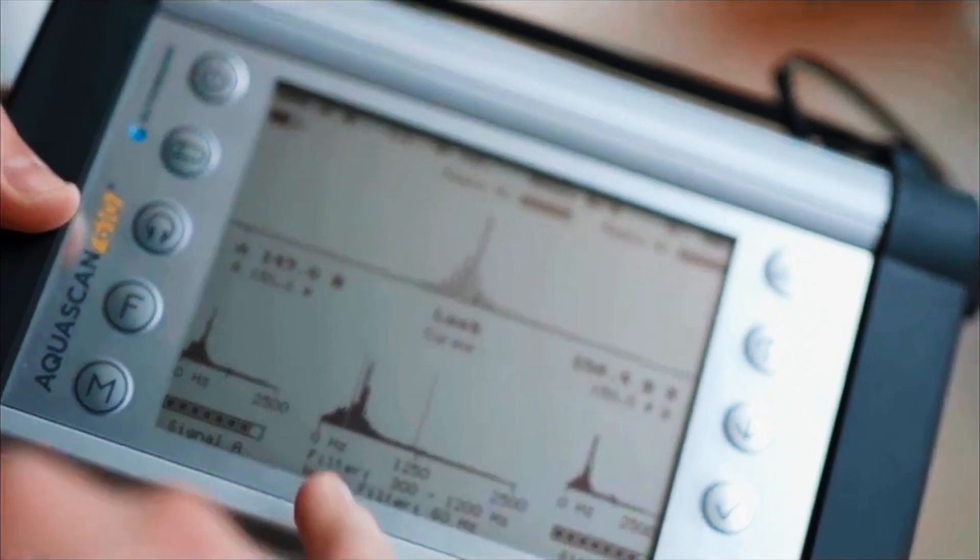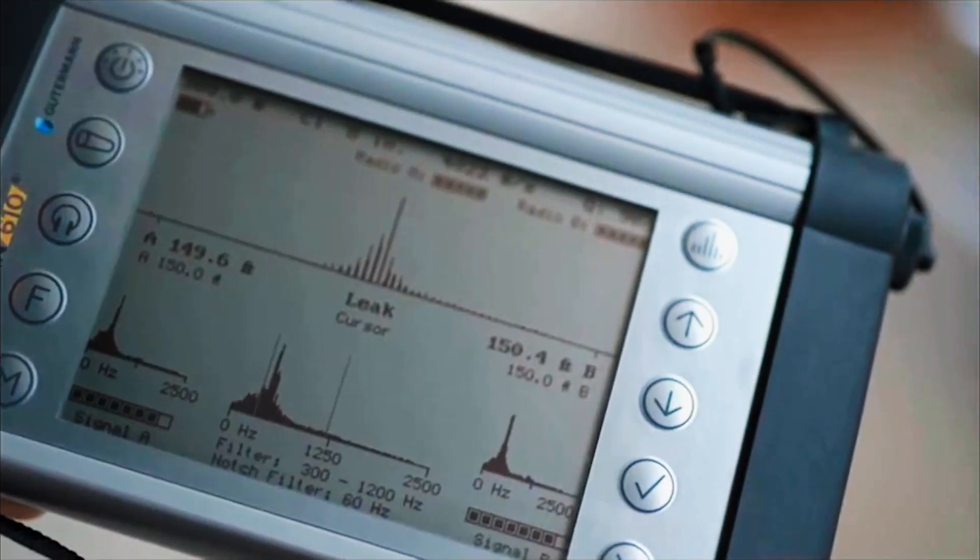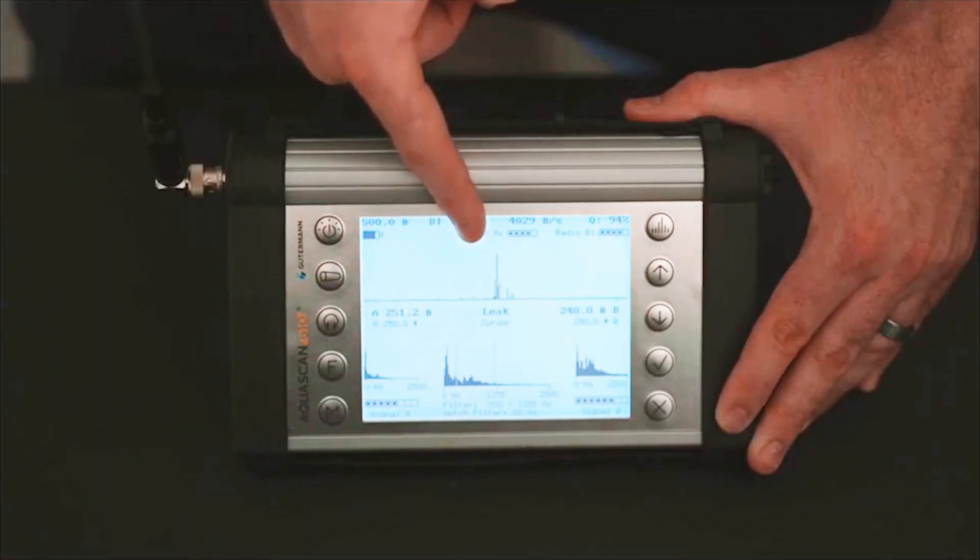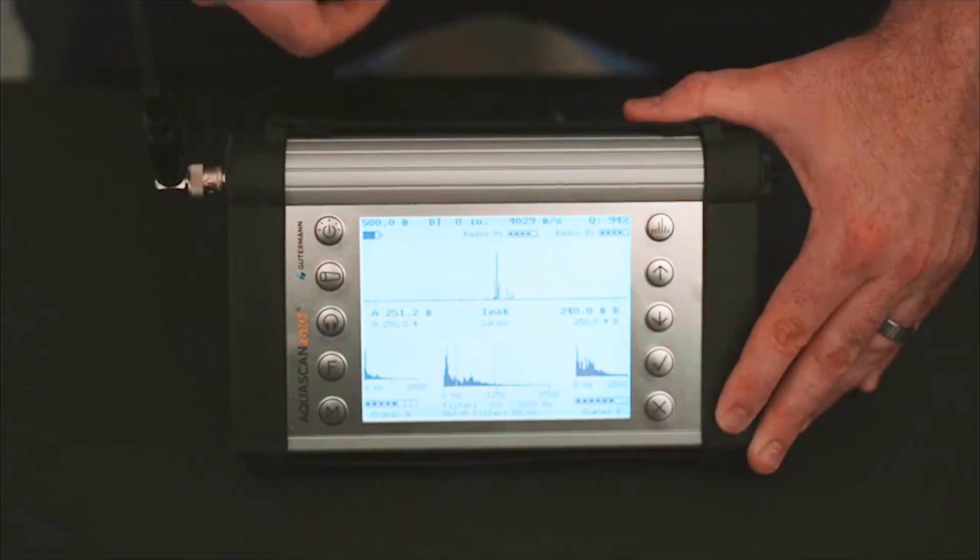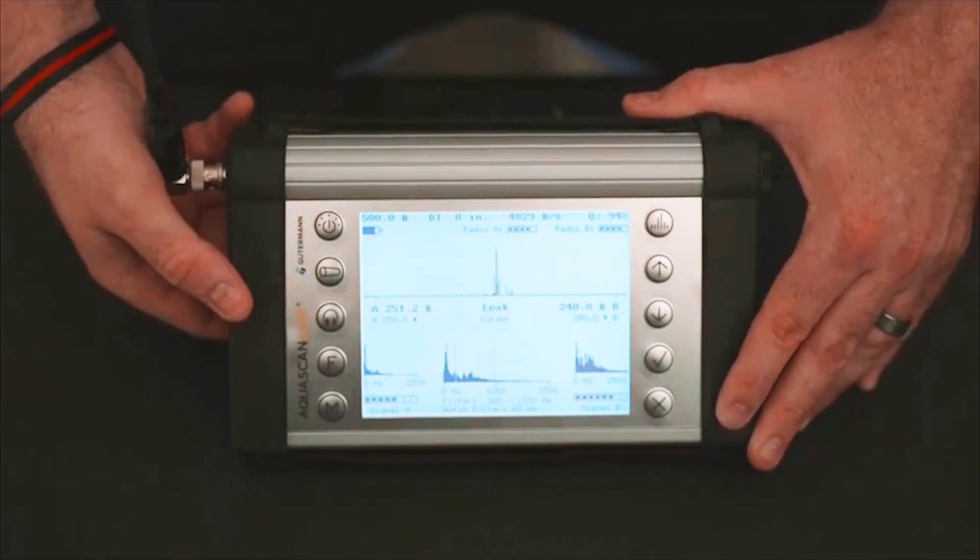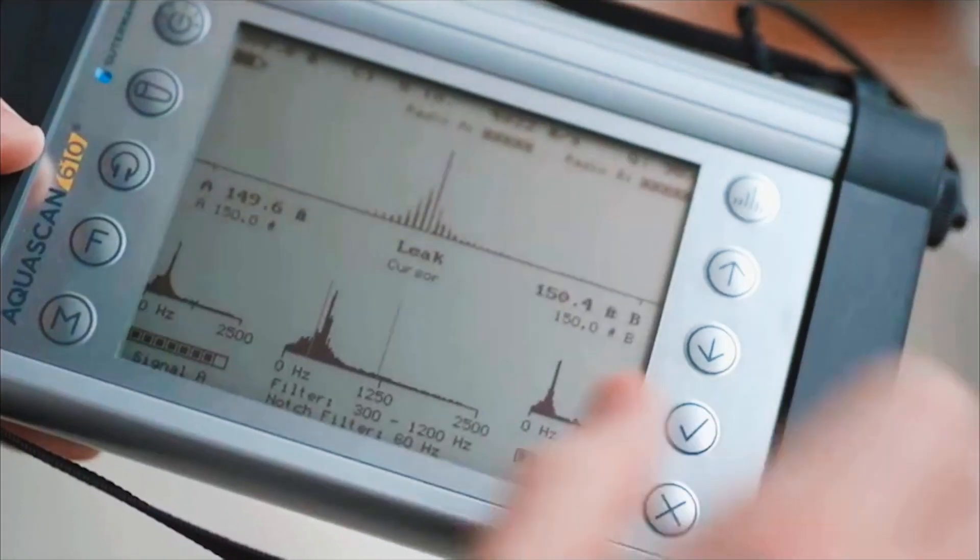The main graph also provides valuable information to the operator about the accuracy and potential for a leak. A leak will provide a clear peak on the graph. The processor's quality percentage number will rise in relation to the presence of a well-defined peak.